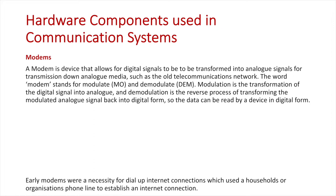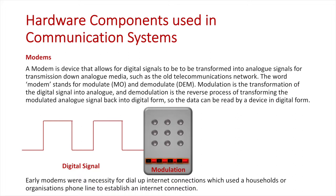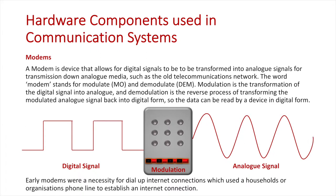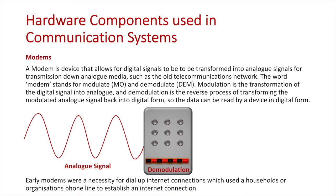Let's have a look at how this might look graphically. Here is a modem — they weren't really interesting-looking objects; they had a number of lights and made some funky sounds when you first turned them on. The first step is modulation: the computer has a digital signal, and it transforms — modulates — that into analog so it can be transferred down the telecommunications network using analog wires as an electrical current. At the receiver's end, the analog signals are received and demodulated back into a digital signal so that the destination computer can read the data in its digital format.